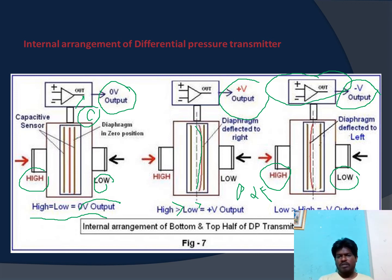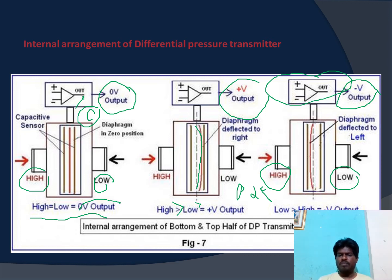In this way, the differential pressure transmitter works and can be utilized for different applications — to measure the flow rate and to measure the level inside a tank. In this example we considered the flow rate going through the pipe. I think you liked this video. Thank you for watching, we will meet in the next video.